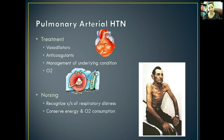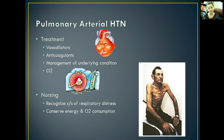To treat pulmonary arterial hypertension, we can give vasodilators to open up those vessels, allow more adequate blood flow, and decrease the pressures. Anticoagulants are also effective to decrease the incidence of clots due to the hypertension. We want to manage the underlying condition and give supplemental oxygen to increase oxygenation. As a nurse, we want to recognize symptoms of respiratory distress, treat them effectively, and conserve the patient's energy by increasing rest and relaxation.